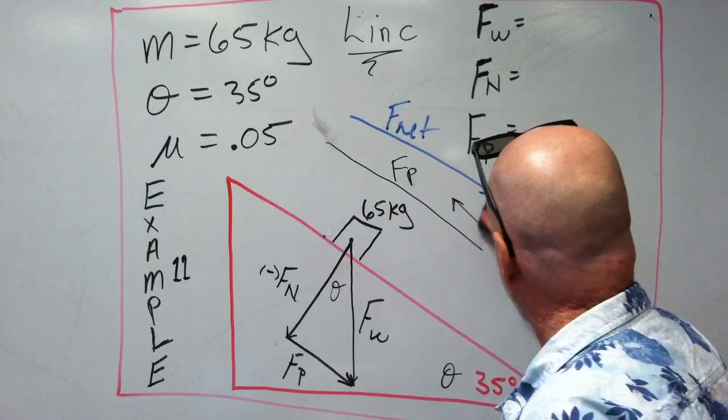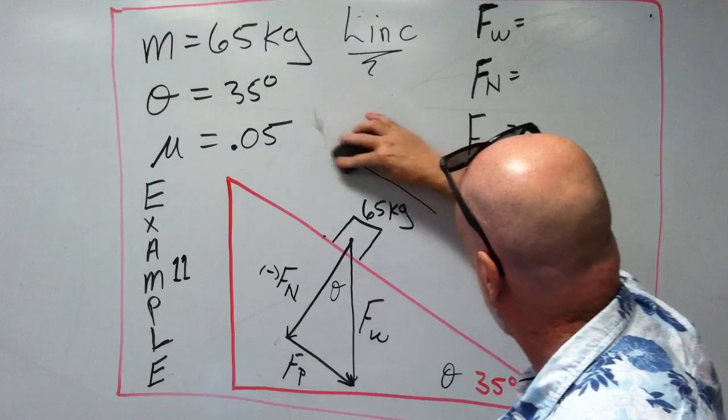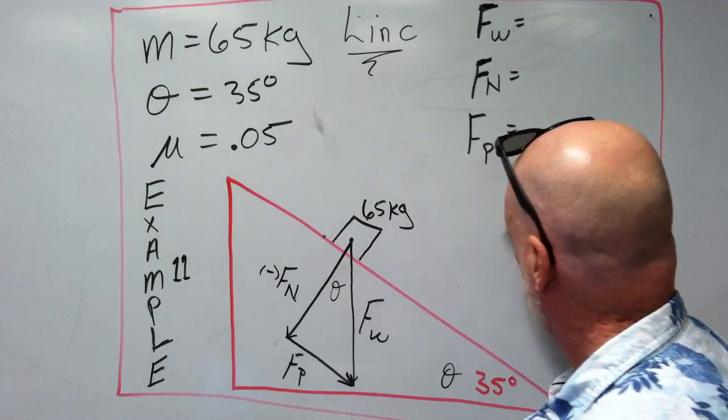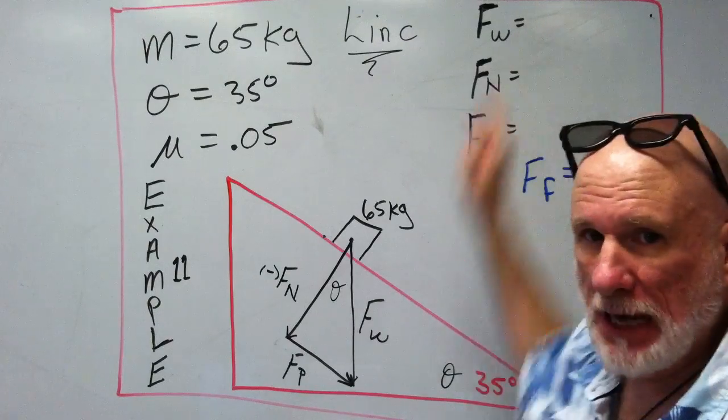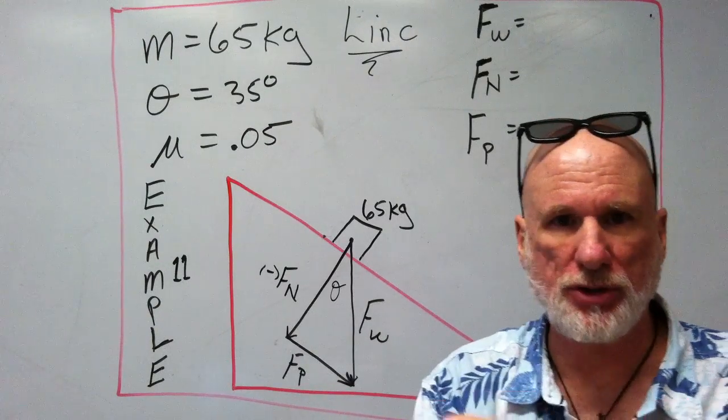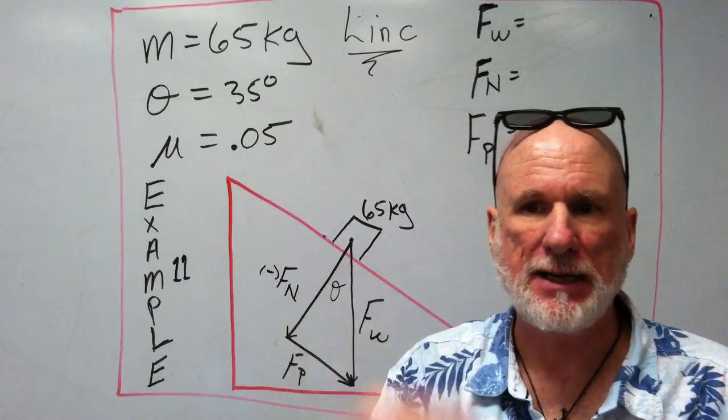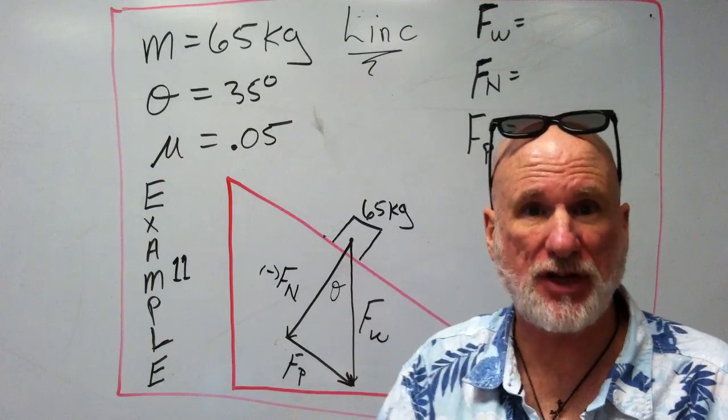Let's erase some of this. Now, FW will use G, we'll use 10 meters per second squared, 10 times 65, 650 newtons.